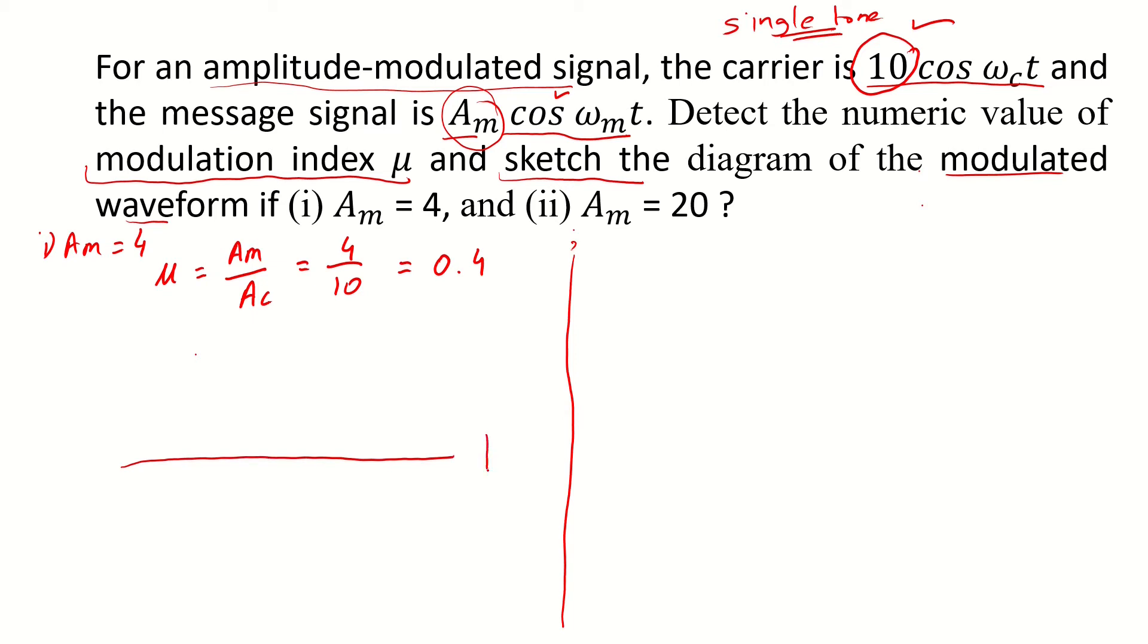The modulated waveform in time domain - we know that the carrier is at 10, that is the amplitude is at 10. So amplitude would be 10 plus 4. 4 is coming from the peak amplitude of the message signal, and then we would have a lower lobe at 10 minus 4.